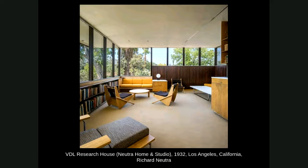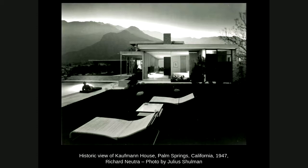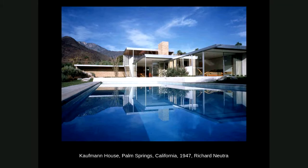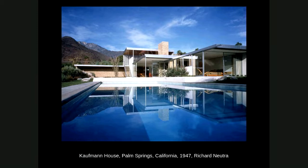The last house I want to talk about from Neutra is one of his most famous — the Kaufman House in Palm Springs from 1947. This is a very famous historic photo by the renowned photographer Julius Shulman, showing somebody lounging by the pool with the mountains in the background. And here's a more contemporary view — this house has been beautifully restored. Palm Springs was the getaway for the rich and famous of LA, so there were lots of wealthy clients — Hollywood stars and so forth — who commissioned architects in the thirties, forties, and fifties to design houses out here. This is one of the greats and one of the early ones by Neutra — he did several others in Palm Springs, but the Kaufman was his greatest work. We see the full emergence of modernism here: walls of glass, flat roofs, and the steel frame fully expressed.